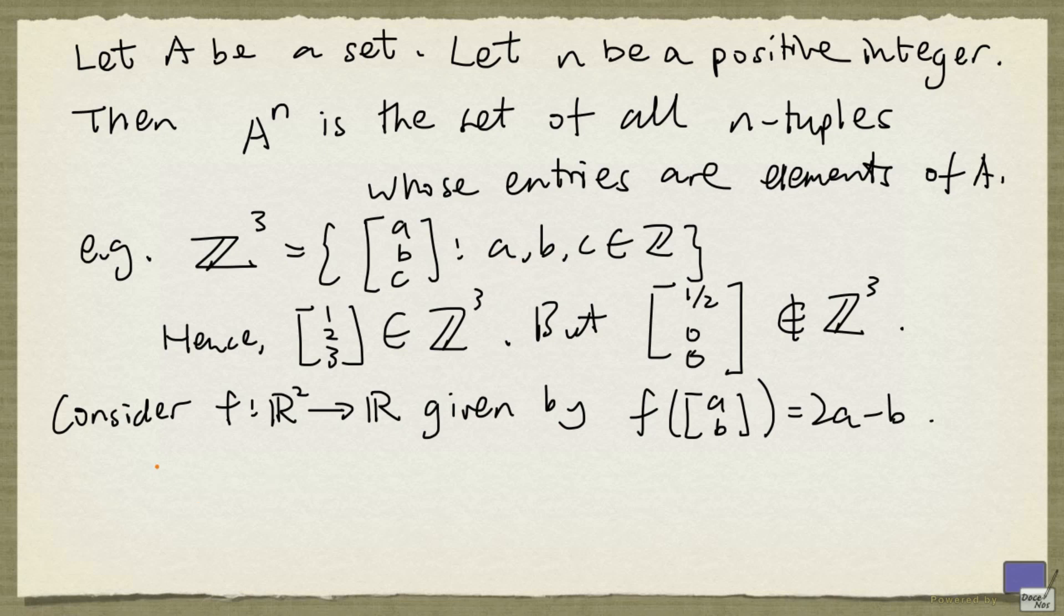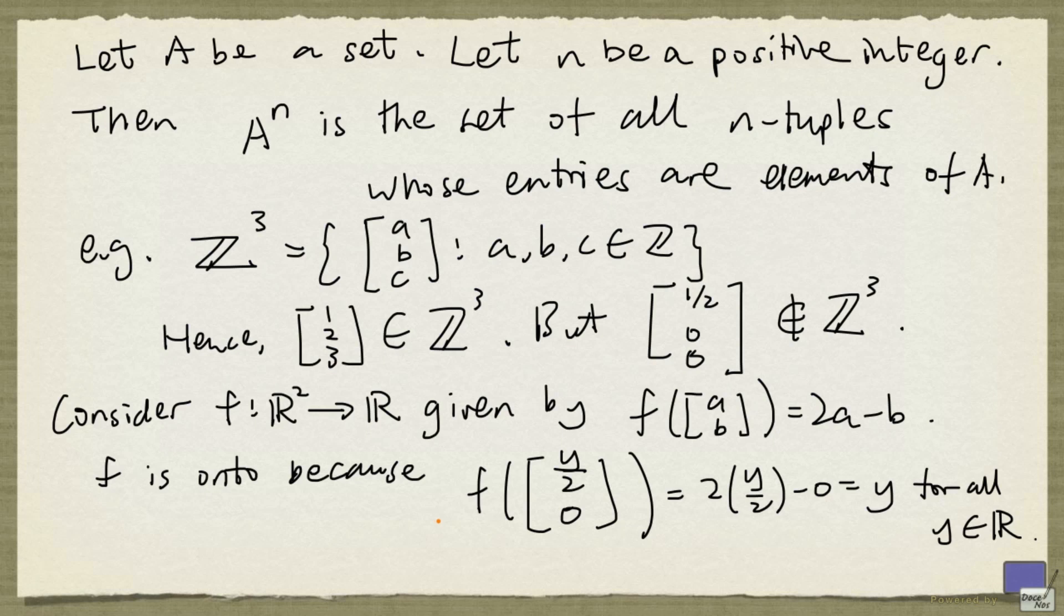Now we claim that f is an onto function. Because we can get any real number as output. How do we see that? If you look at 2a - b, and suppose that b is set to 0, clearly 2a can be any real number. So, more formally, we can write this as f(y/2, 0) = 2×(y/2) - 0. And that's just y. So the range of f is all of ℝ, and we conclude that f is an onto function.